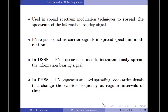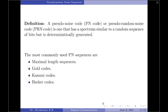Particularly in direct sequence spread spectrum modulation, PN sequences are used to instantaneously spread the information-bearing signal, so the transmitted signal will look like wide-band noise. In frequency hop spread spectrum modulation, PN sequences are used to spread the code carrier signals that change the carrier frequency at regular intervals of time. Therefore the transmitted signal, though narrow band, is very difficult to track because of the constant change in the carrier frequency.